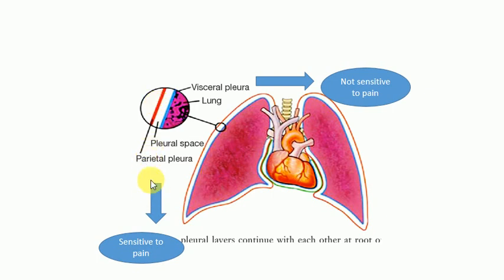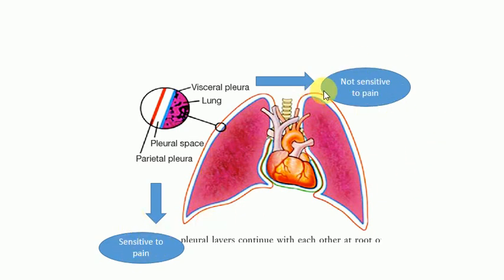An important concept is that the visceral pleura is not sensitive to pain, while the parietal pleura is sensitive to pain. This difference is due to innervation. The parietal pleura is innervated by nerves, making it sensitive to pain, while the visceral pleura is not innervated and therefore not sensitive to pain.